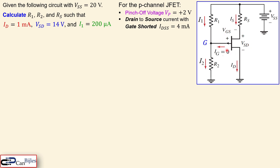Here we have a P-channel JFET, whereas the first example used an N-channel. The arrow at the gate is now going out instead of in — that is the symbol for a P-channel JFET. The gate-to-source orientation is flipped: what was the drain is now the source and vice versa. VSD is shown instead of VDS, source current direction is reversed, and the positive voltage is applied at the source node instead of the drain. Everything is reversed, similar to PNP vs NPN BJT transistors.